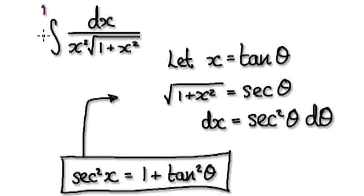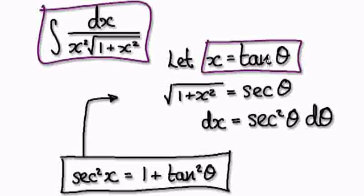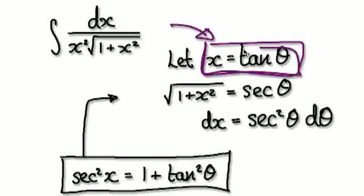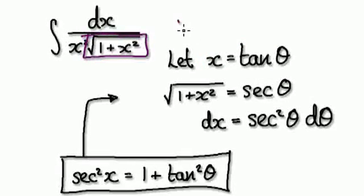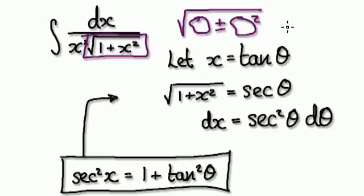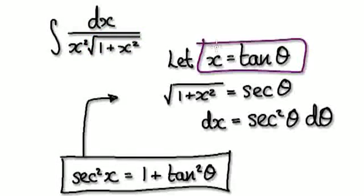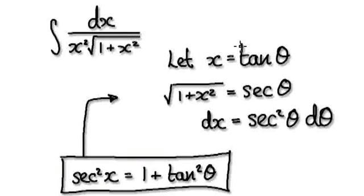To integrate this, let x equal tan(θ). The first question is: how do we know we should make this substitution? It's only after a matter of time and experience before you realize why. Anything of the form square root of something plus or minus something squared — you should make a certain trigonometric substitution. For the time being, just accept that we should make this substitution.